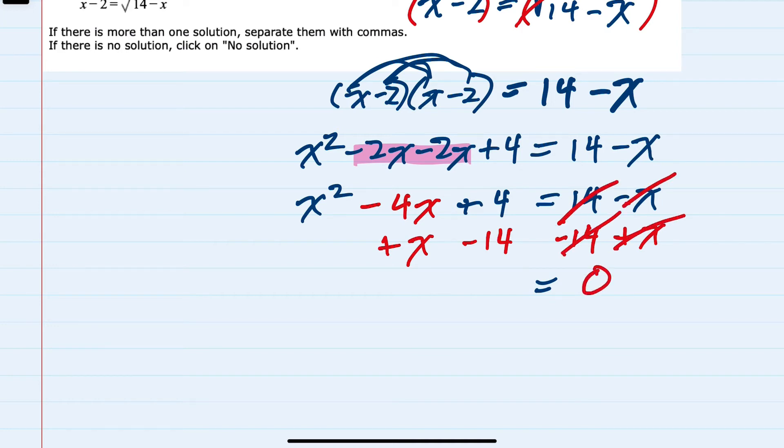On the left hand side we have x squared, combining like terms, that's minus 3x, and minus 10, that I can now factor.